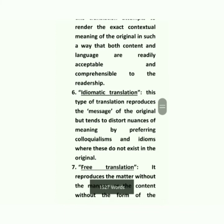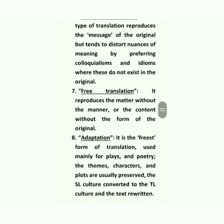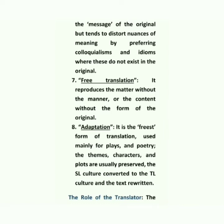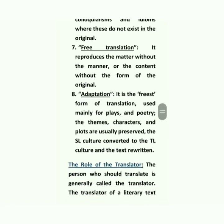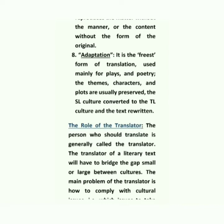Fifth is communicative translation, which attempts to render the exact contextual meaning of the original in such a way that both content and language are readily acceptable and comprehensible to the readership. Sixth is idiomatic translation, which reproduces the message of the original but tends to distort nuances of meaning by preferring colloquialisms and idioms where these do not exist in the original. Seventh is free translation, which reproduces the matter without the manner, or the content without the form of the original. Eighth is adaptation — the freest form of translation, used mainly for plays and poetry — where the themes, characters, and plots are usually preserved, the SL culture is converted to the TL culture, and the text is rewritten.